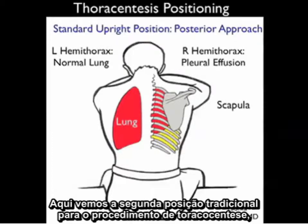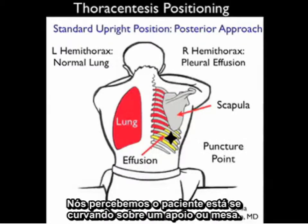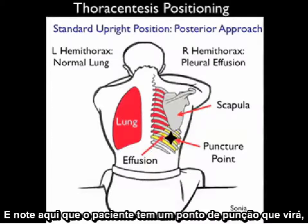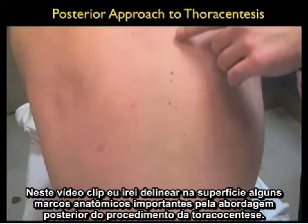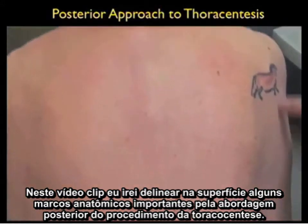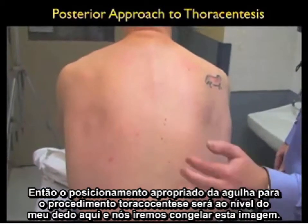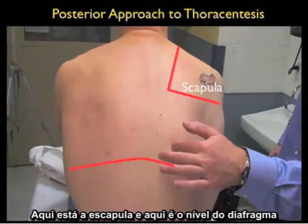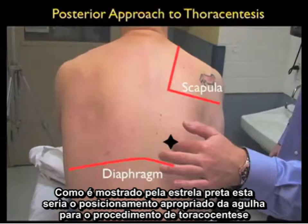Here we note the second traditional patient position for thoracentesis: the standard upright position, where the needle comes in from a posterior approach with the patient bending forward over a stand or table. We see a pleural effusion within the right chest, with the puncture point coming in below the scapula but above the level of the diaphragm. I'll outline the surface anatomy for the posterior approach — here's the level of the scapula on the posterior chest wall, and this is about the level of the diaphragm. The appropriate needle positioning is safely above the diaphragm, as indicated by the black star, to avoid puncturing into the abdominal cavity.